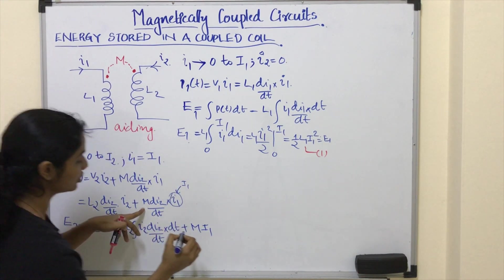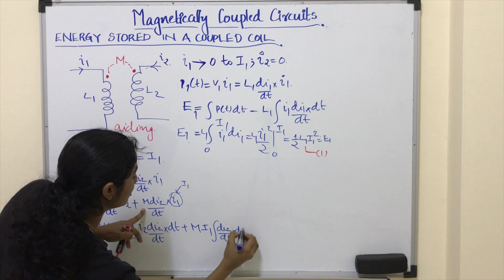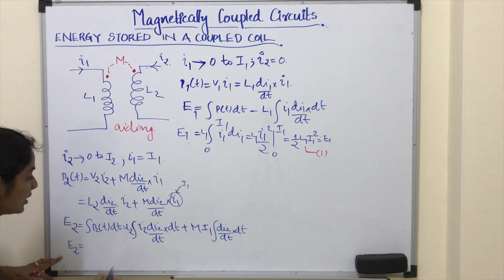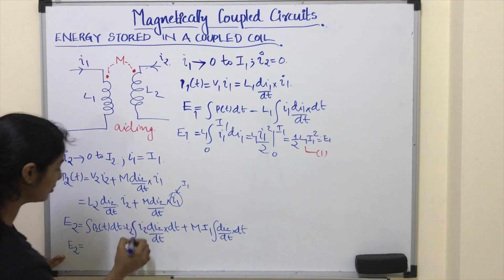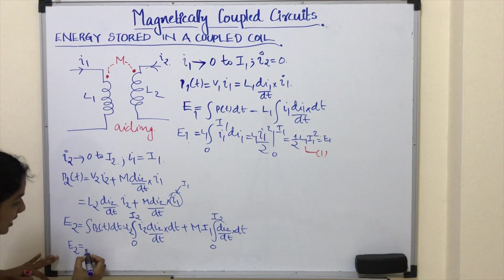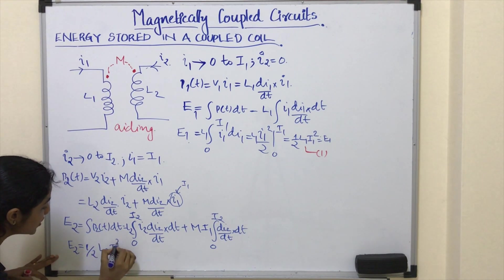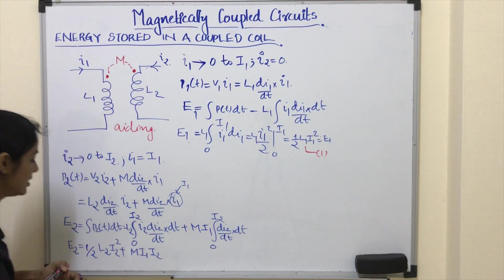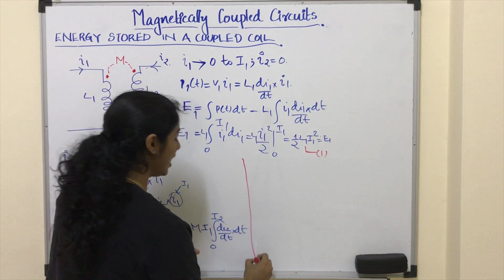So E2 equals — the differentiation and integration cancel — integral of I2 dI2 with limits 0 to I2, plus M·I1 times integral of dI2 with limits 0 to I2. The result is half L2 I2 squared plus M·I1·I2. This is equation number 2.